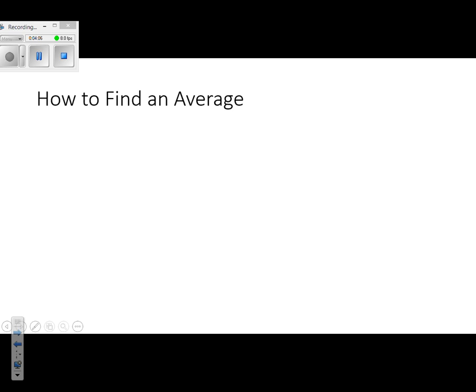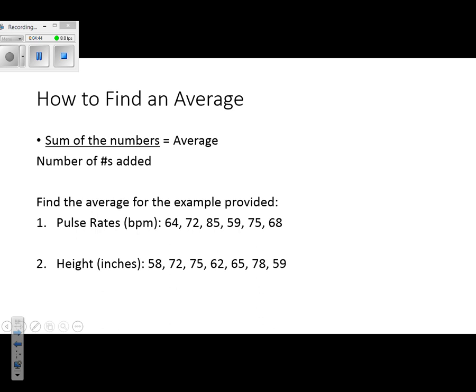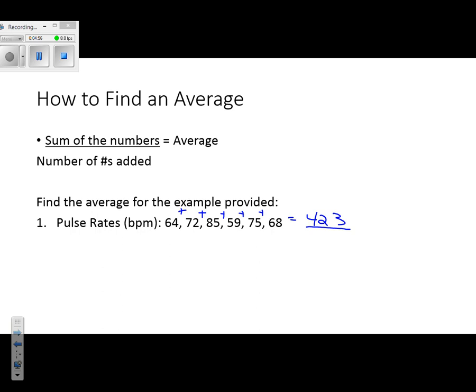How do you find an average? If you have to do any math on the test, it'll probably be finding an average. You need the sum of the numbers and then divide by how many numbers you added — that gives you your average. For the pulse rate example, when you add all of those numbers up, you get 423. There are 6 values, so dividing 423 by 6 gives you 70.5.